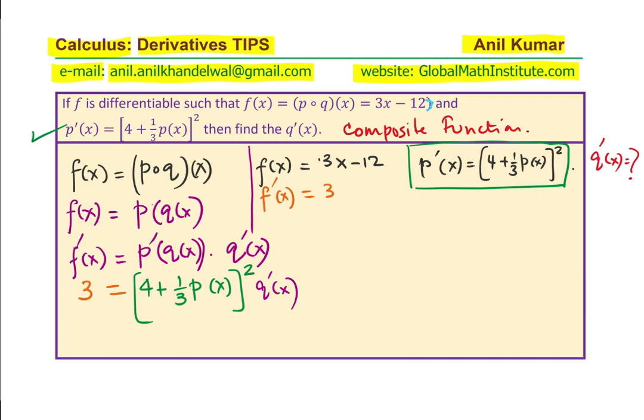Now, what is this inside function? The inside function is also given to us as 3x - 12. We can now write this as 3 = [4 + (1/3)(3x - 12)²] × q'(x).